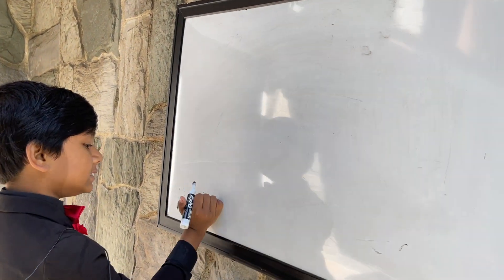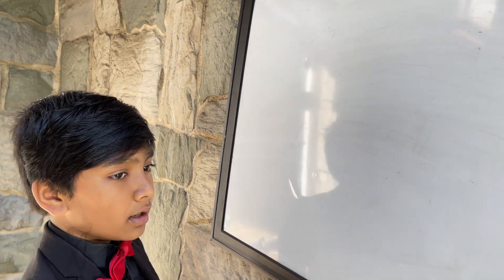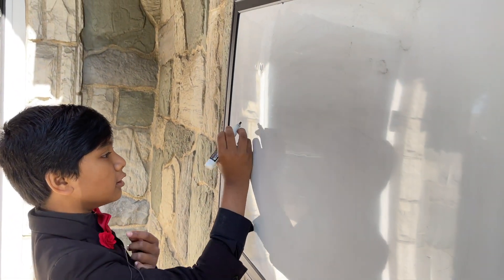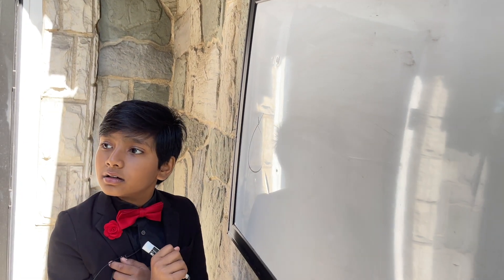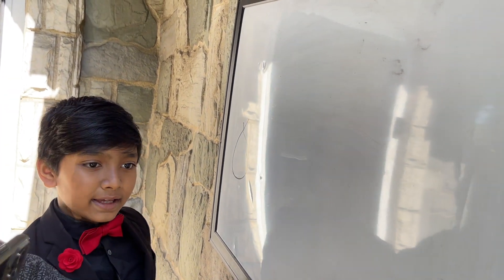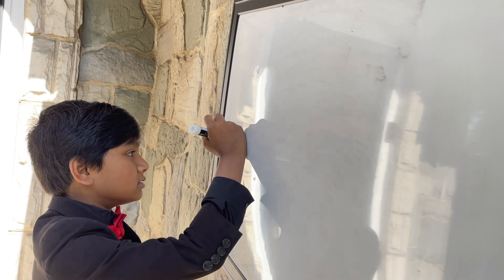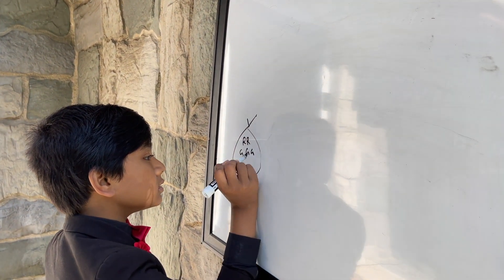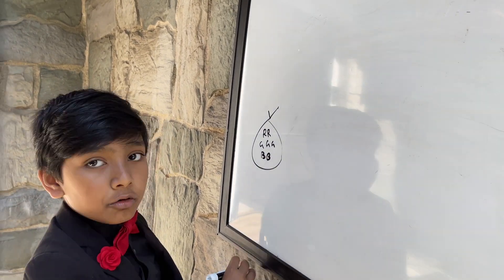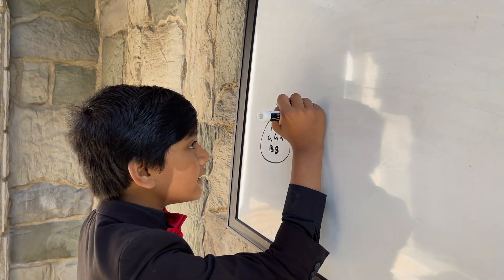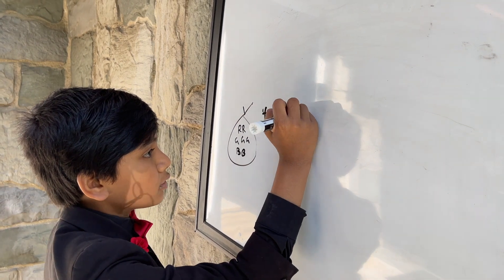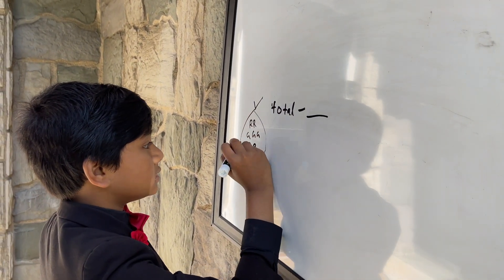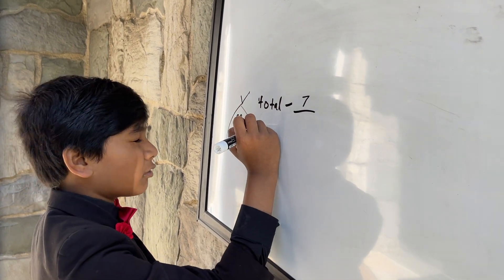Probability is chance, as we know it. Let's imagine we have a bag. This bag has two red marbles, three green marbles, and two blue marbles. So how many marbles does it have in total? Well, there are seven marbles.